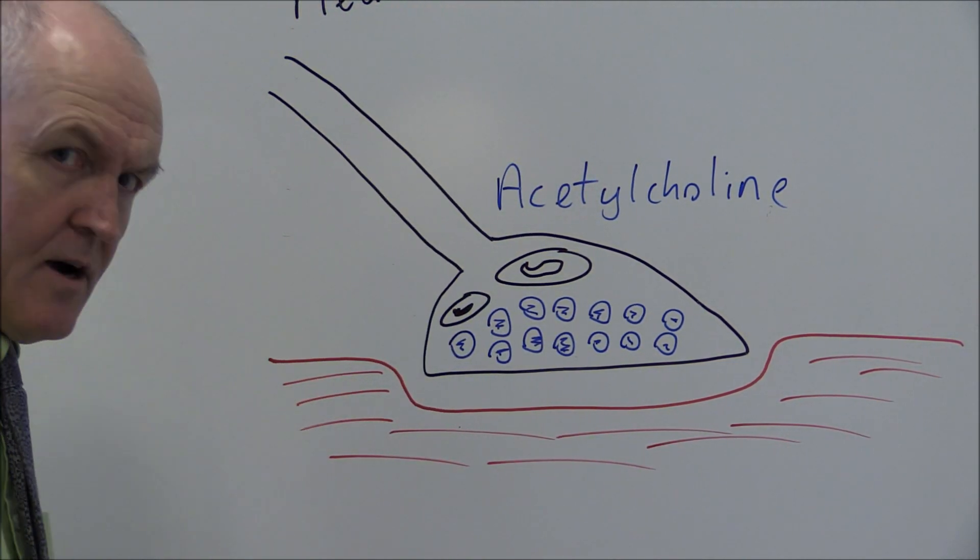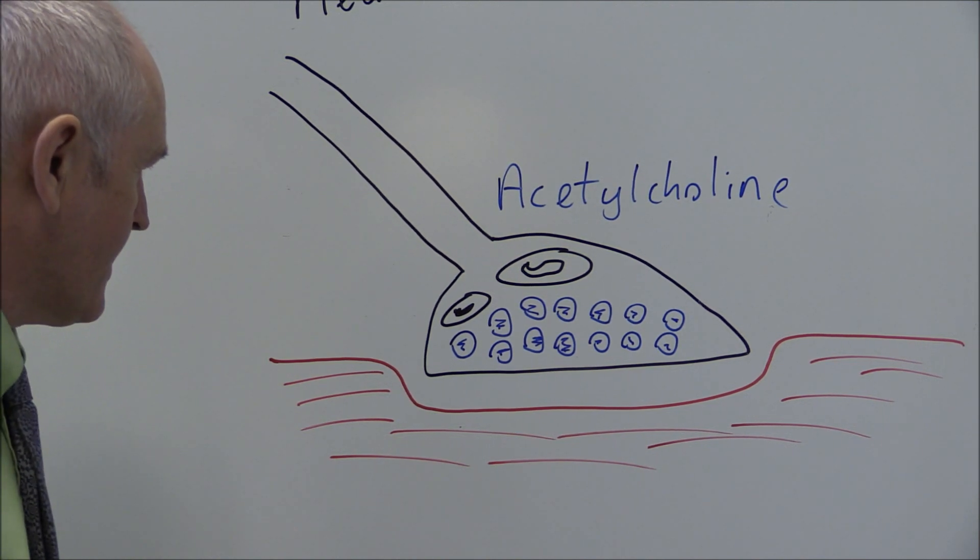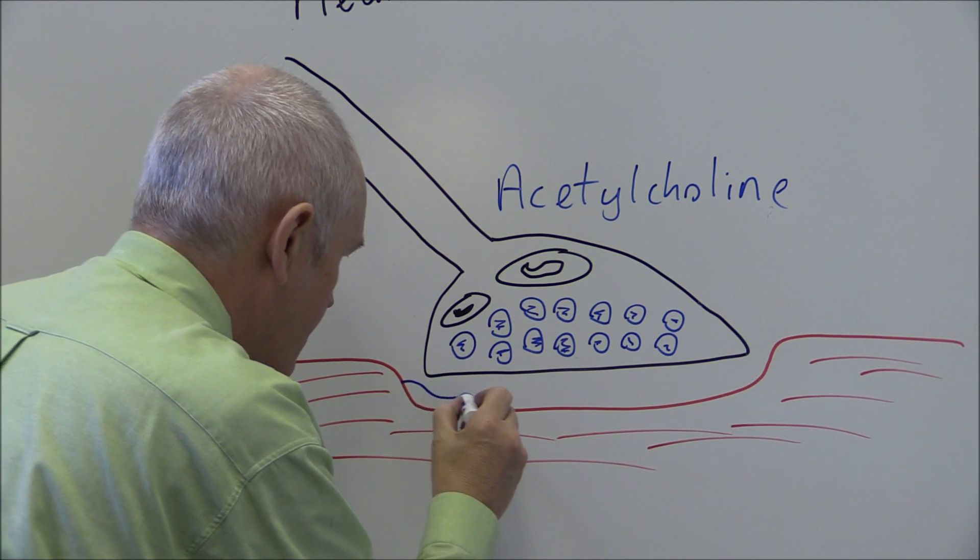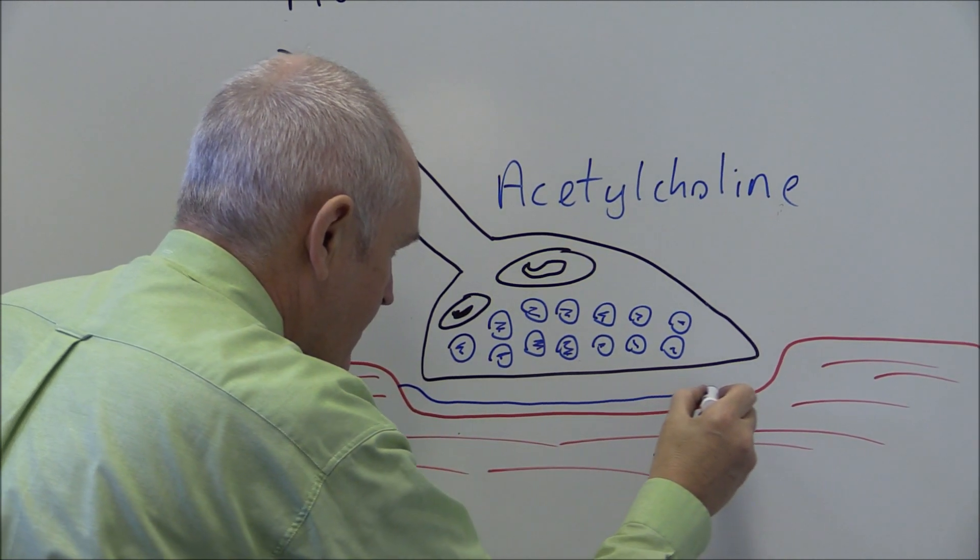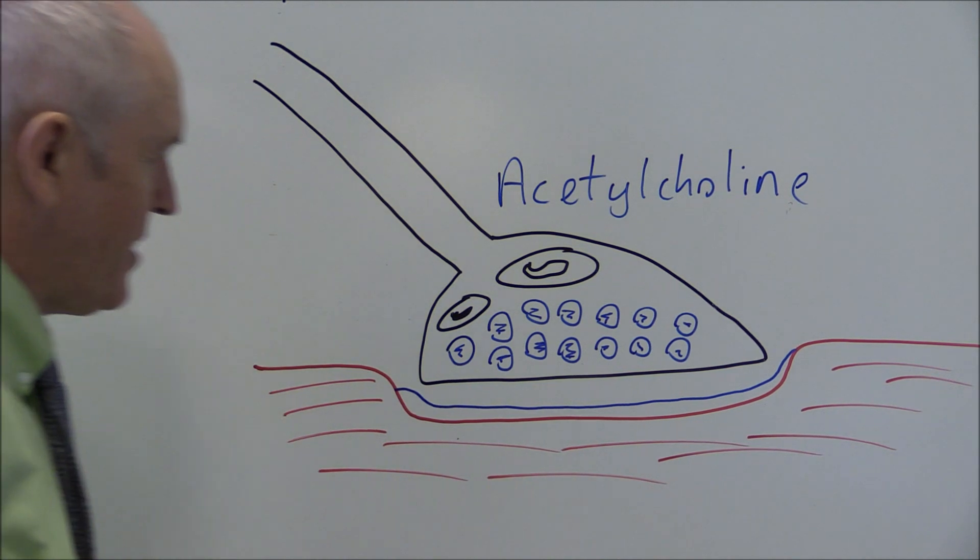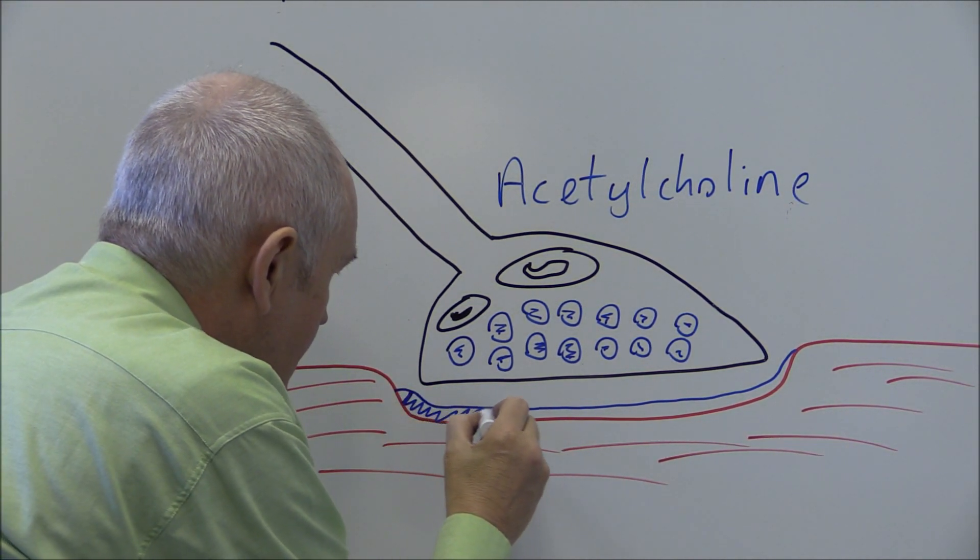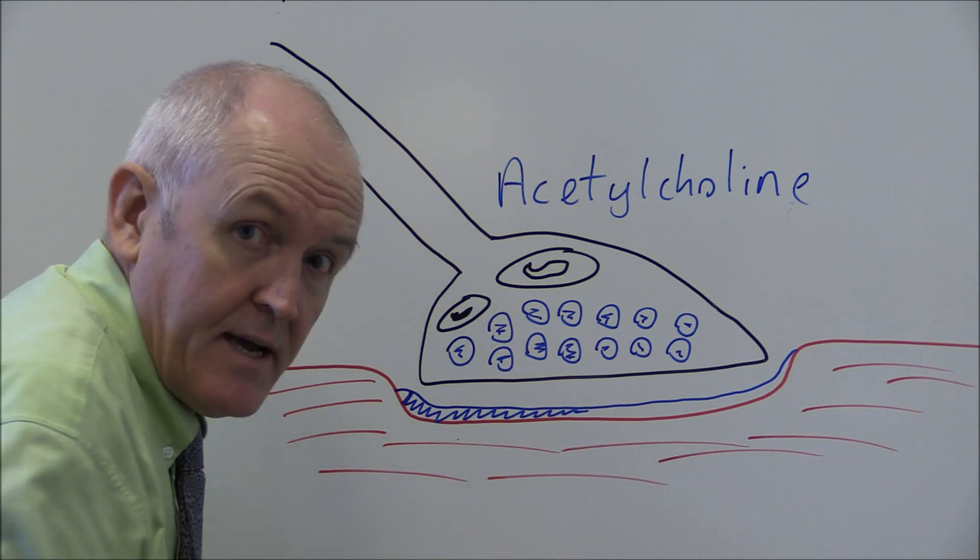But lying over the surface of the muscle in the footprint area of the end part of the motor neuron, this area here is called the motor end plate.